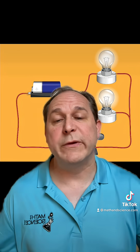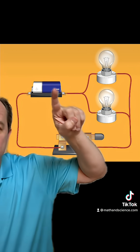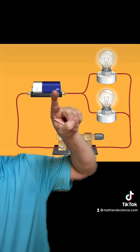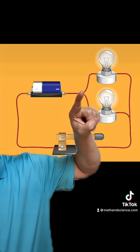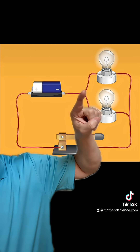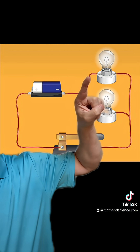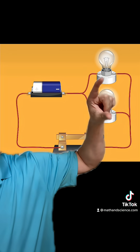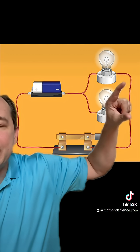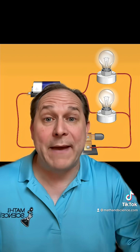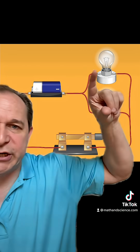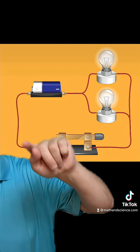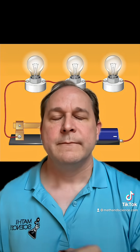Contrast that with a parallel circuit. In a parallel circuit, the electricity comes out but then immediately branches and splits, going through each light bulb in parallel with one another, before recombining and going back into the battery.